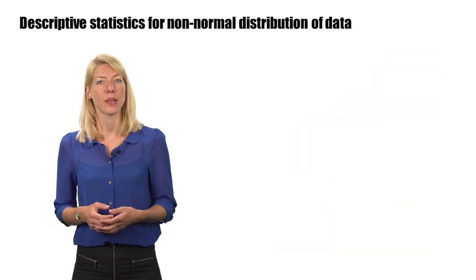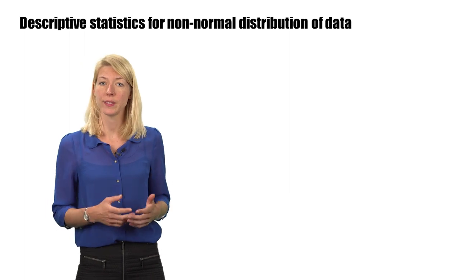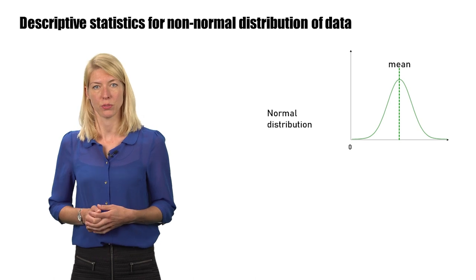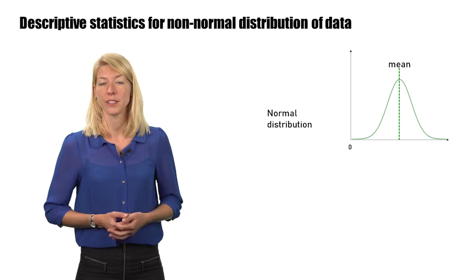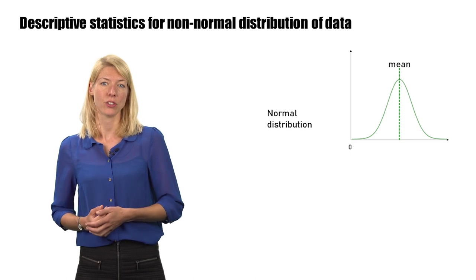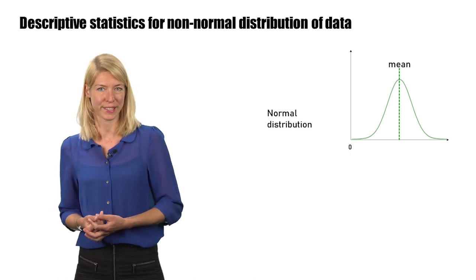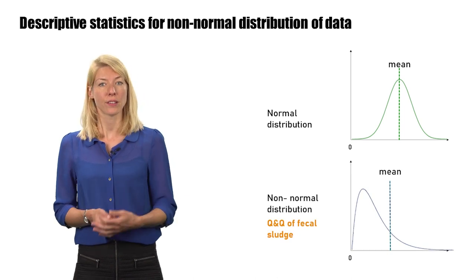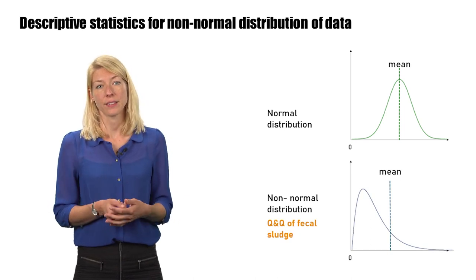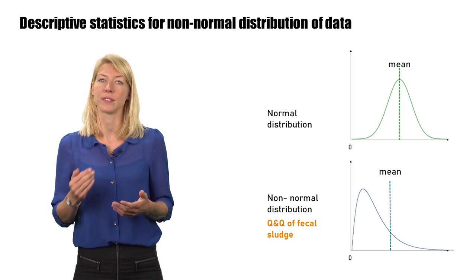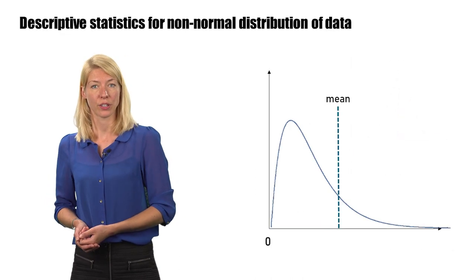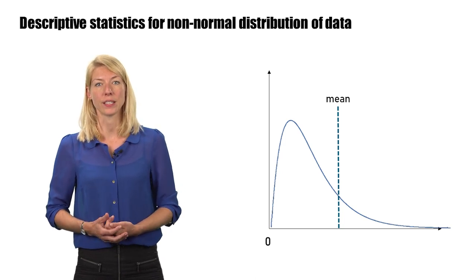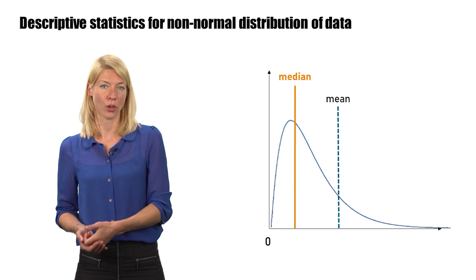One problem with making predictions is that quantities and qualities of fecal sludge typically do not follow a normal distribution. For normally distributed data, mean and standard deviation provide useful summary statistics. However, if the data is skewed, using the mean is not very representative, as extreme data points influence it disproportionately. Therefore, summary statistics that can deal with non-normal data are needed, such as the median with confidence intervals.